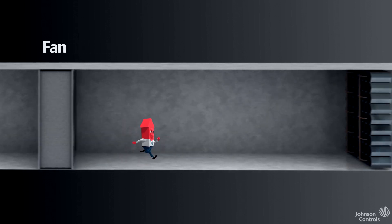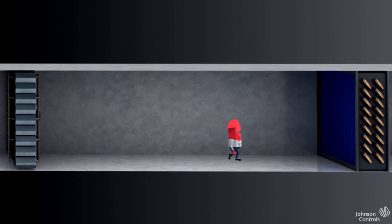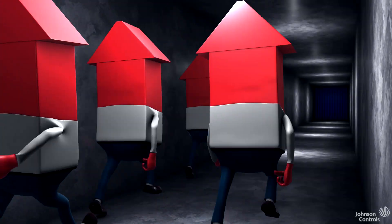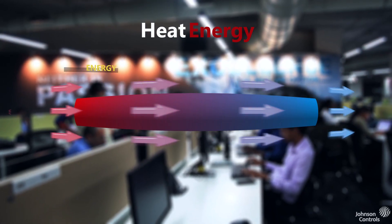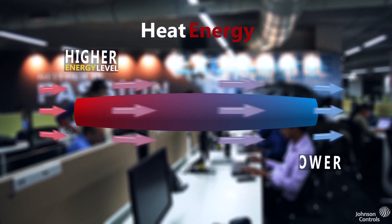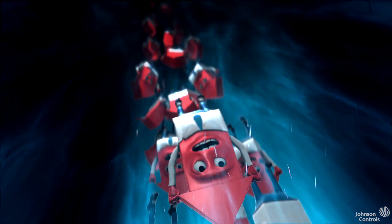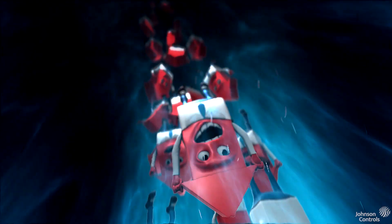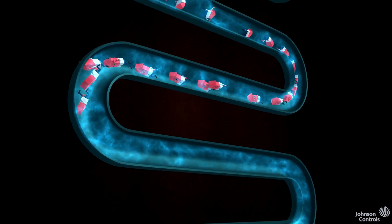After whizzing around in the fan and zipping through a bank of filters, Mr. BTU eventually finds himself traveling across a cold, chilled water coil. Remembering that heat always travels from a higher energy level to a lower energy level, he now enters the chilled water through the walls of the cooling coil. With all of his friends, the effect is to raise the temperature of the chilled water and heat is removed from the air stream, cooling it down.